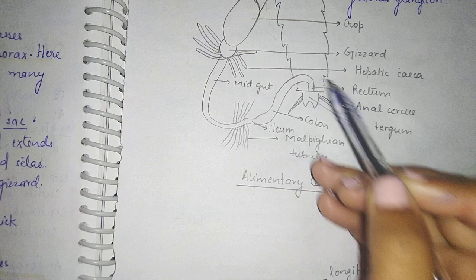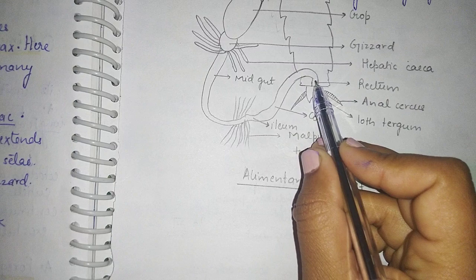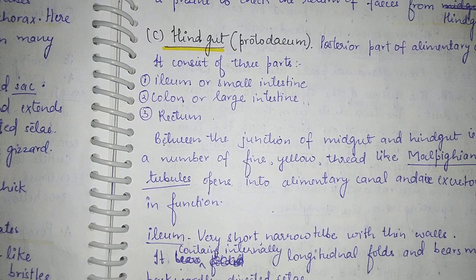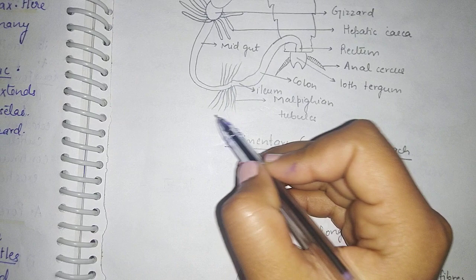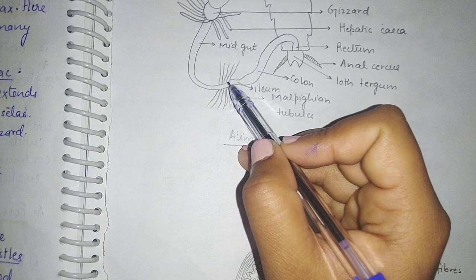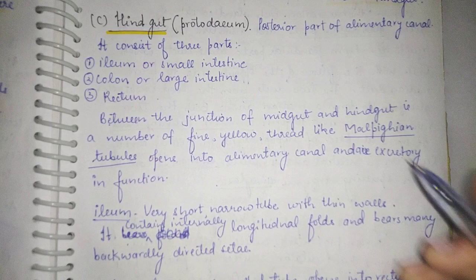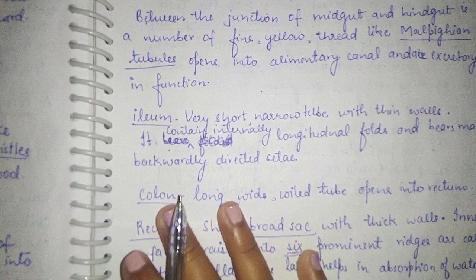The hindgut, also called proctodeum, is the posterior part of the alimentary canal. It is further divided into ileum, colon, and rectum. The ileum is the small intestine, the colon is the large intestine, and it ends with the rectum which opens at the anus. At the junction of the midgut and hindgut, there are a large number of thread-like yellow-colored structures called Malpighian tubules, which open into the alimentary canal and are excretory in function.